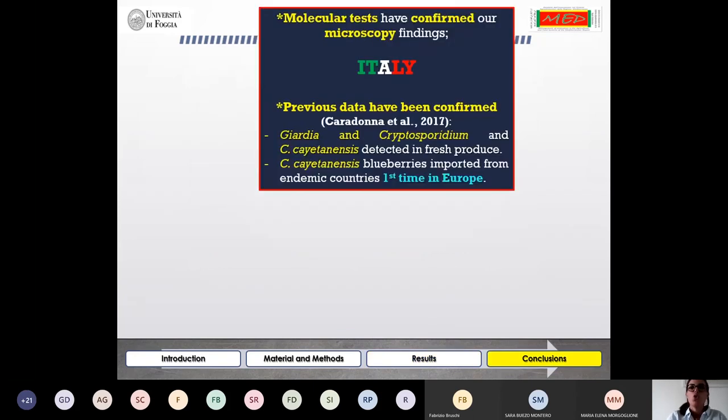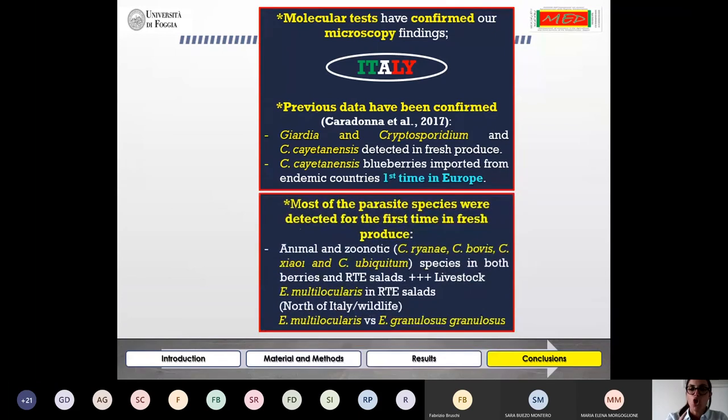First of all, the molecular tests that we have carried out have confirmed our microscopy findings. In addition, previous data have been confirmed in Italy. Giardia, Cryptosporidium, and Cyclospora cayetanensis have once again been detected in fresh produce. However, Cyclospora cayetanensis in this study was detected in blueberries imported from endemic countries for the first time in Europe. Also in this study, most of the parasite species were detected for the first time in fresh produce. Animal and zoonotic Cryptosporidium species were found in both berries and ready-to-eat salads, and Echinococcus multilocularis was found in ready-to-eat salads.